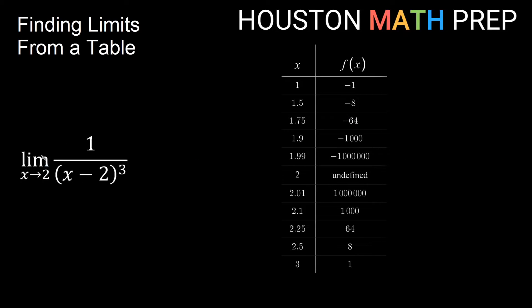For our next example, the limit as x approaches 2 of 1 over x minus 2 cubed. You might notice if we plug in 2 into our function here, we get 2 minus 2, which is 0. 0 cubed would still be 0. So we're undefined at 2. It says that in our table. But what happens as we get closer and closer to 2?